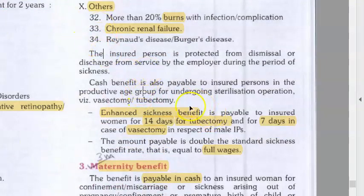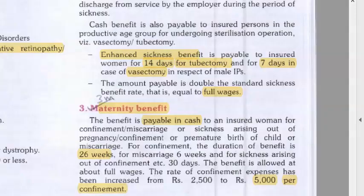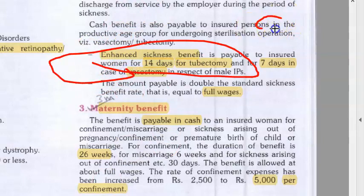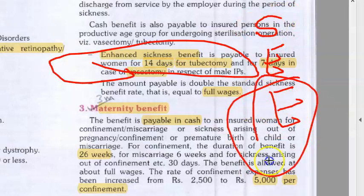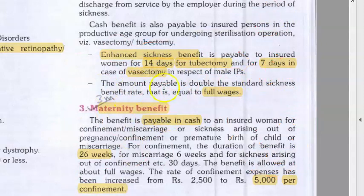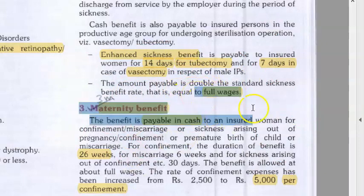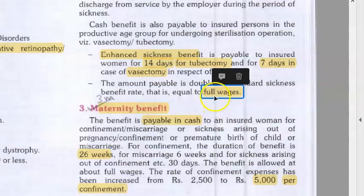Under enhanced sickness benefit — for vasectomy, 7 days are given for men; for tubectomy, 14 days are given for women. Here, full wages are paid — not just 50% of average wages — full wages.